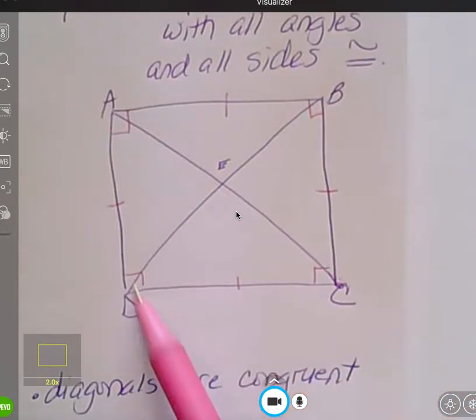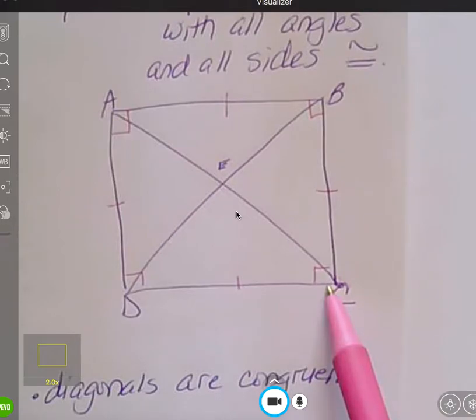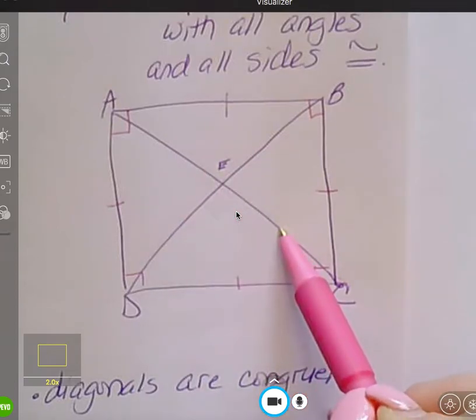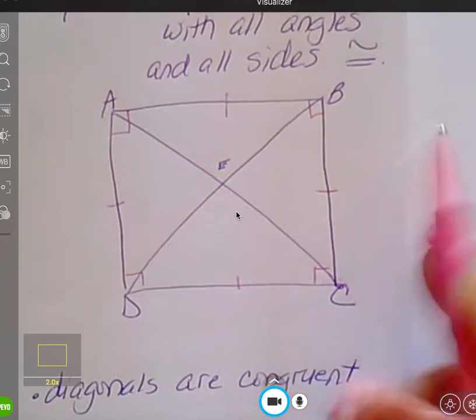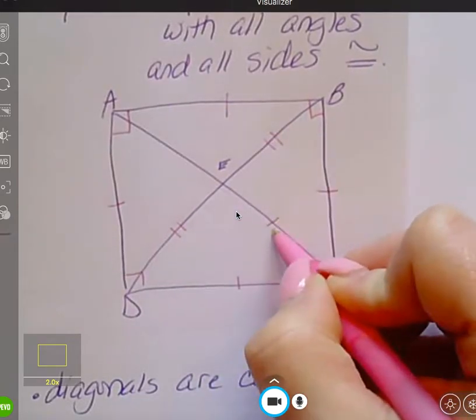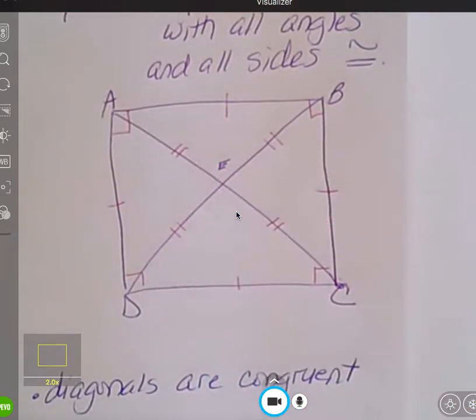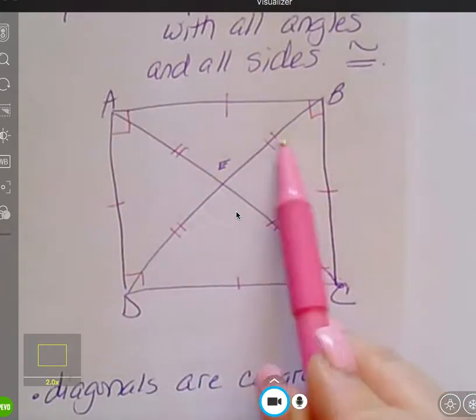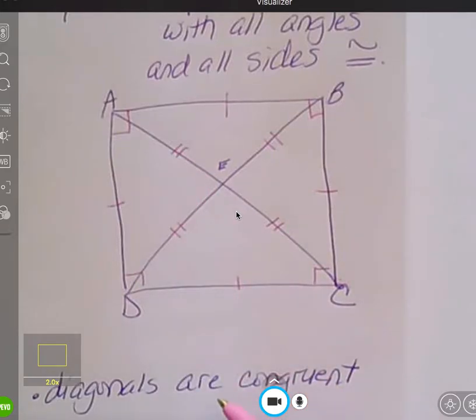Because I have a rectangle, one of the things I remember about a rectangle is that these four little pieces here of the diagonal, they're all congruent to each other. So, I'm going to mark this guy. All four of these, exactly the same. So, I know in a square, all of these pieces are congruent to each other.